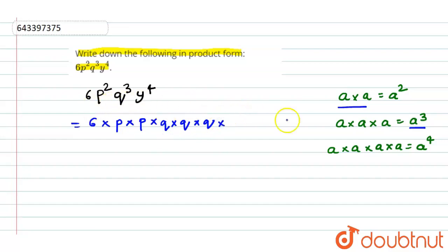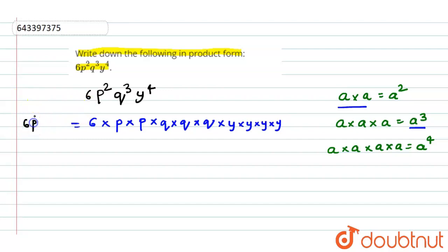And Y to the power 4 is Y into Y into Y into Y. So, the product form of 6P squared Q cubed Y to the power 4 is 6 into P into P into Q into Q into Q into Y into Y into Y into Y. I hope you get the answer.